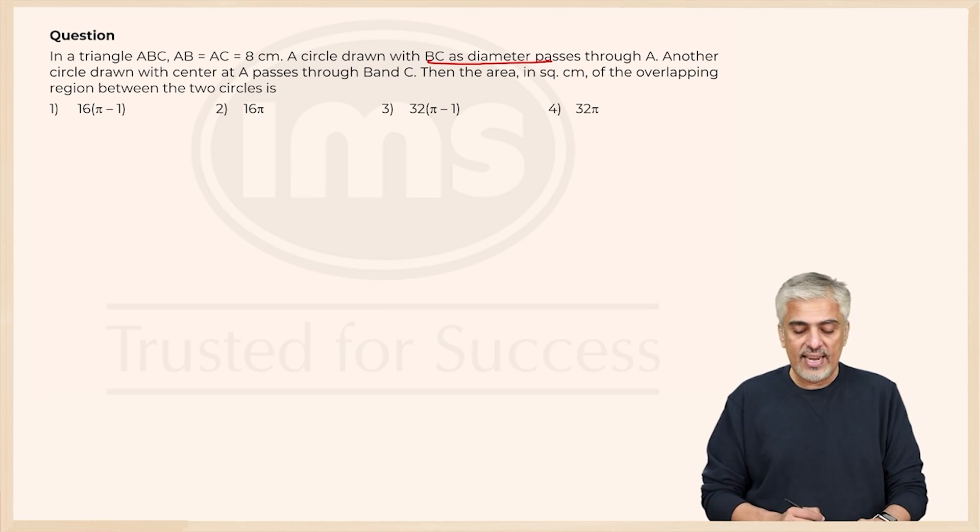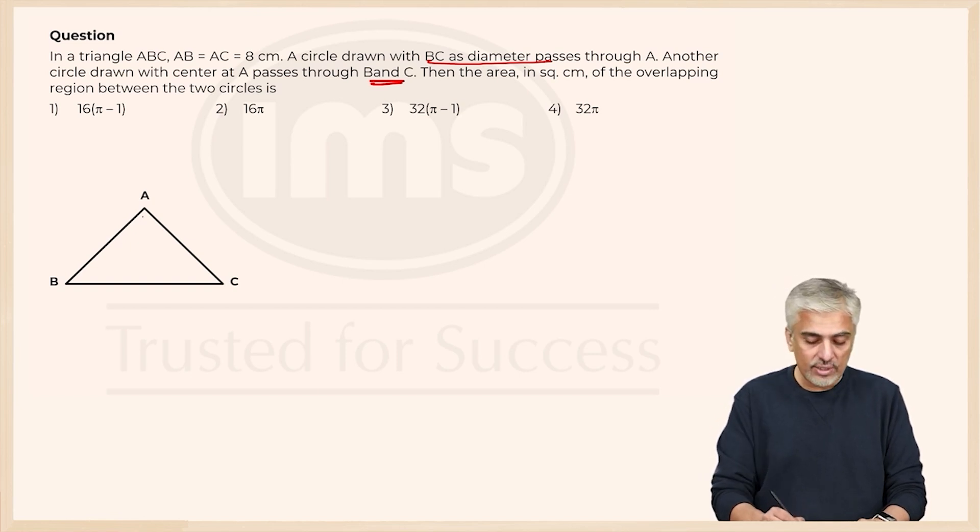Another circle drawn with center at A passes through B and C. Now getting the diagram right was very important. This is the original triangle which is a right angle triangle at A. So this angle will be 90.